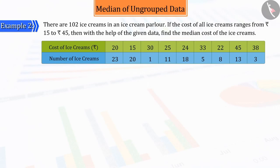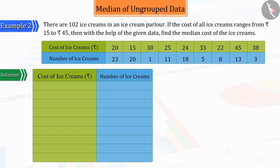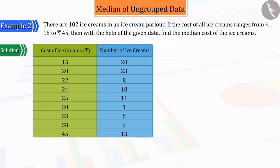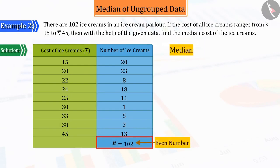Let us try to solve this. We know that for median, we first need to arrange the data in ascending order and display in the following way. Given that the number of ice creams, that is n, is 102, which is an even number.